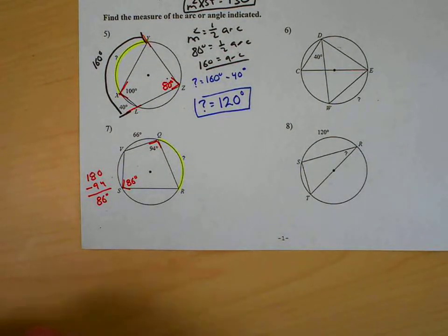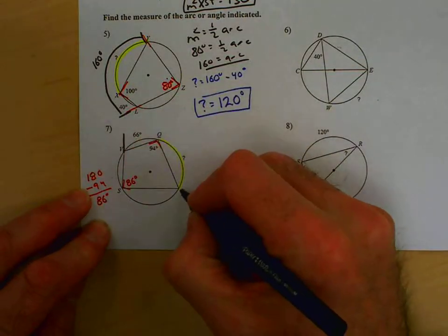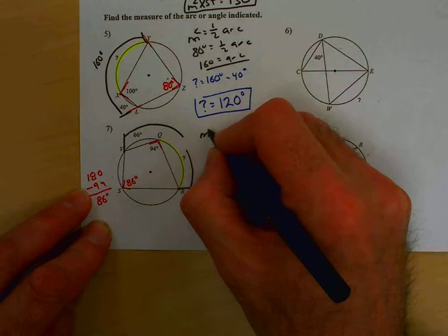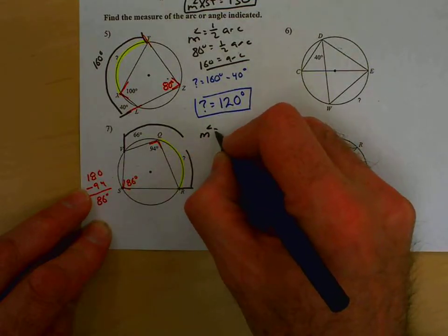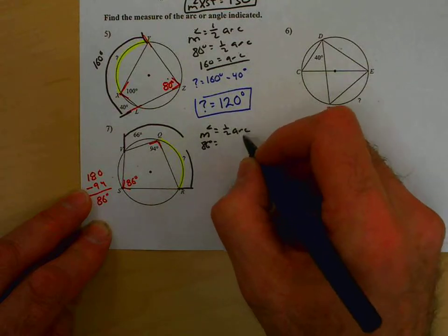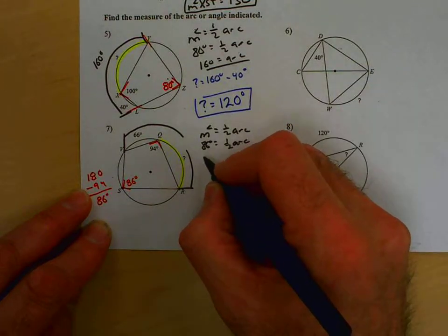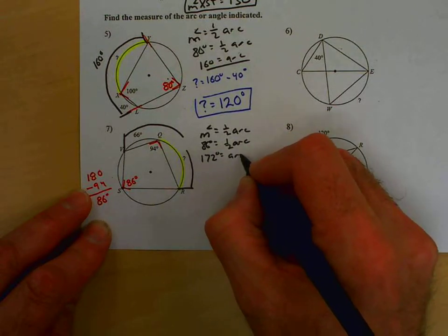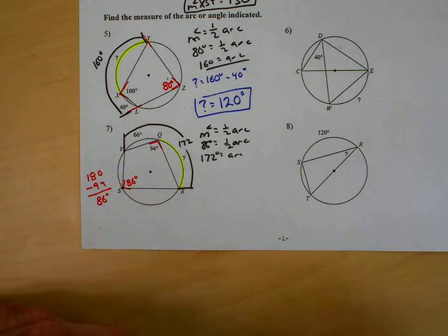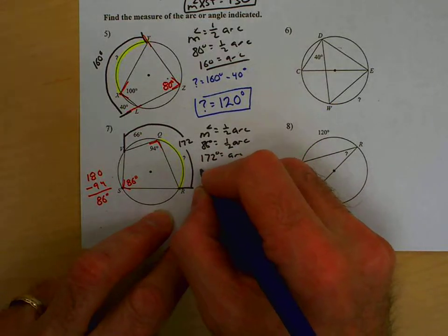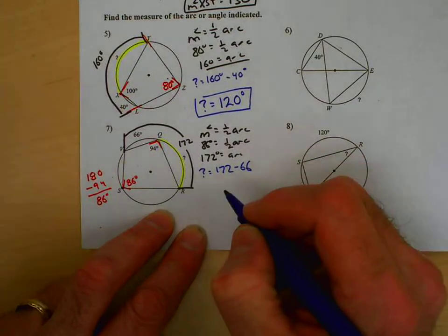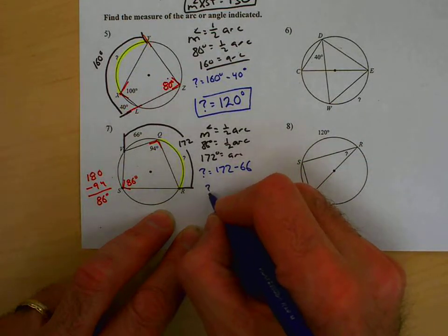And just like we talked about the last time, we had this angle intercepts this arc. And that arc that we're talking about is the same inscribed angle. Vertex is on the circle. So, the measure of the angle equals half the arc. The angle equals 86 degrees. So, that's one half the arc. Double both, you get 172. This is the arc. So, this is 172. This 172 minus 66 will equal the question mark. So, we have question mark equals 172 minus the 66. 172 minus the 66, question mark then would equal 106.